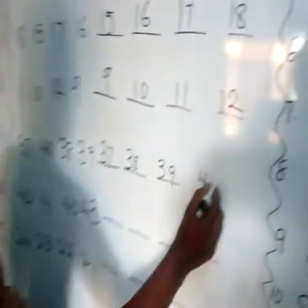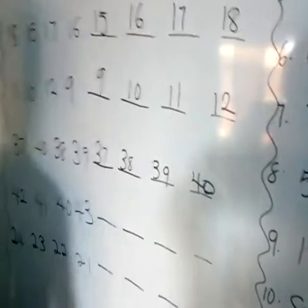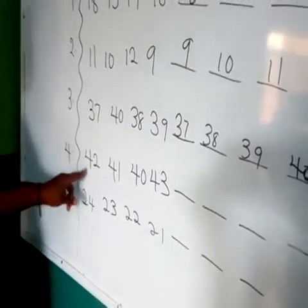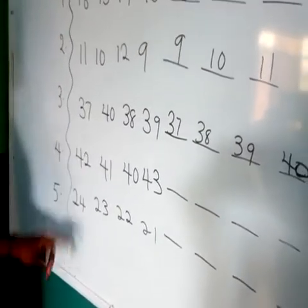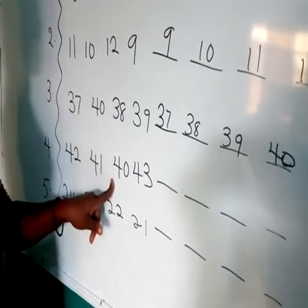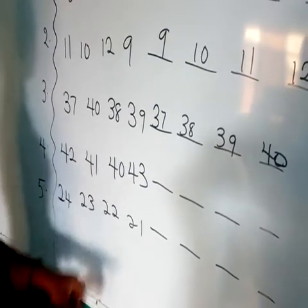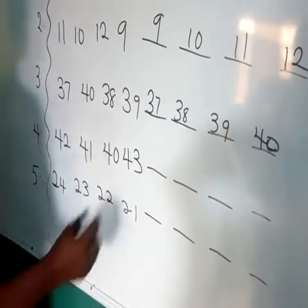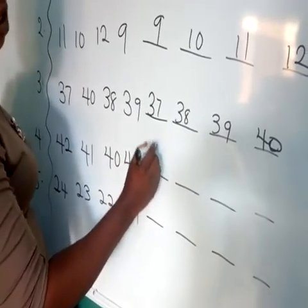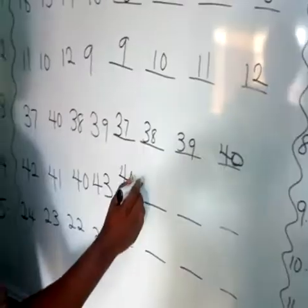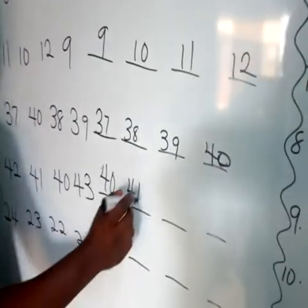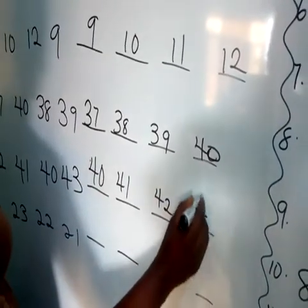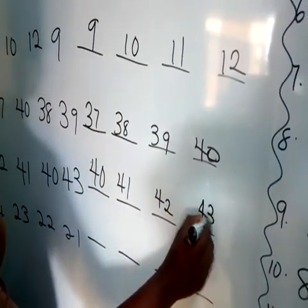Number 4: we have 42, 41, 40, and 43. We can't go first — we have 40 as our first number. Let's go: 4 and 0 is 40, 4 and 1 is 41, 4 and 2 is 42, 4 and 3 is 43.